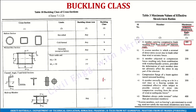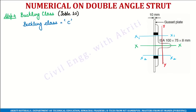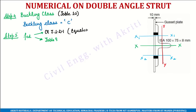From Table 10, the buckling class for a built-up section of angles is Class C. To calculate FCD, we can either use clause 7.1.2.1 with equations or use Table 9. We will use Table 9C since the buckling class is C. With Fy = 250 N/mm² and lambda = 155.96, we look up Table 9C.